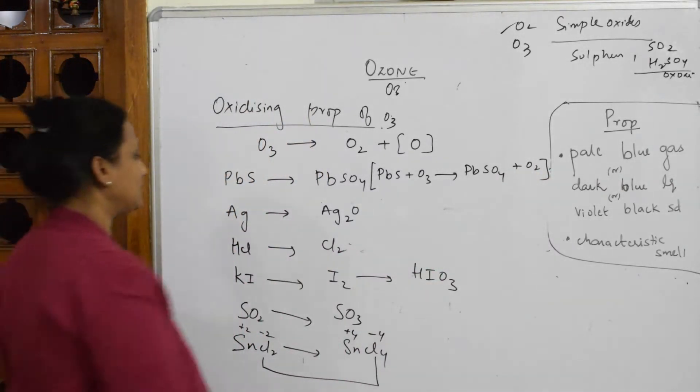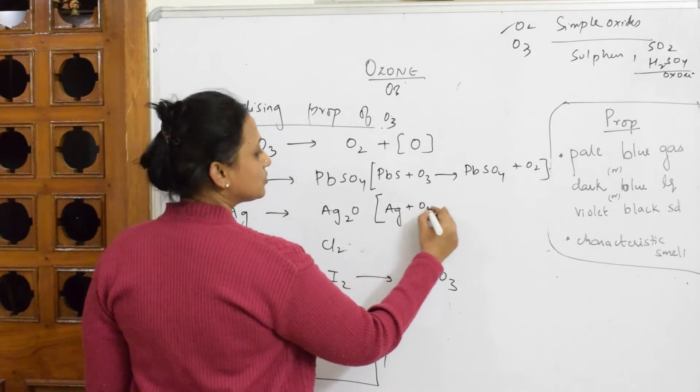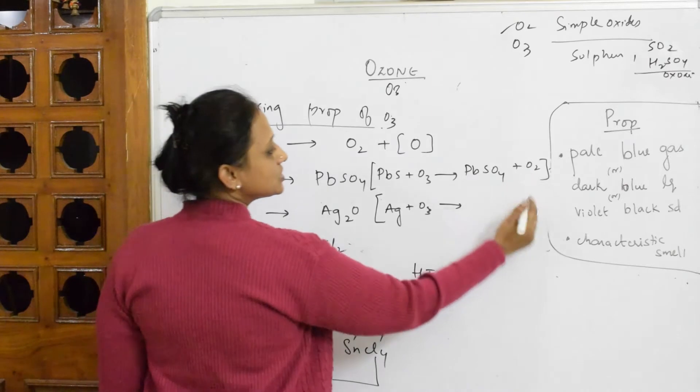Now silver is going to combine with ozone. So what do you get? The same concept. Ozone dissociates into oxygen and silver gets, or here it is zero oxidation state isn't it?